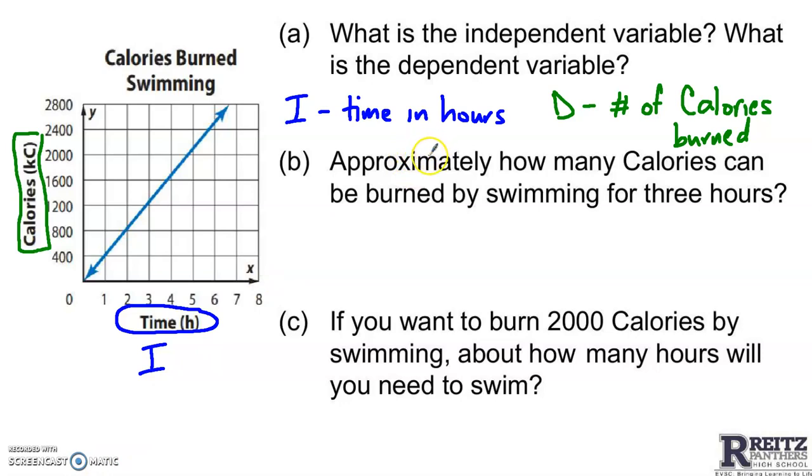B says approximately how many calories can be burned by swimming for 3 hours. 3 hours is x equals 3, right here. To me that looks like it's just a little bit more than 1,200. But if you said that was exactly 1,200 I would buy it. I'm going to say it's about 1,250 calories. If you said 1,200 we would take it, if you said 1,300 we would take it. Give a ballpark and be able to defend your answer. Explain that you saw a point on the graph that answered the question.